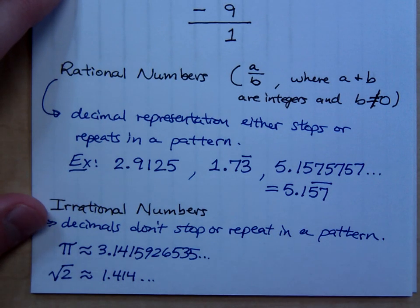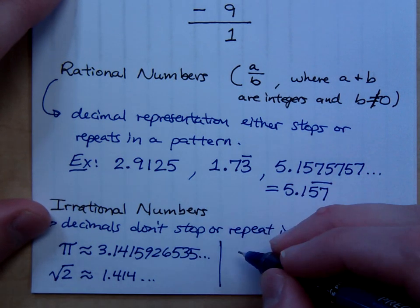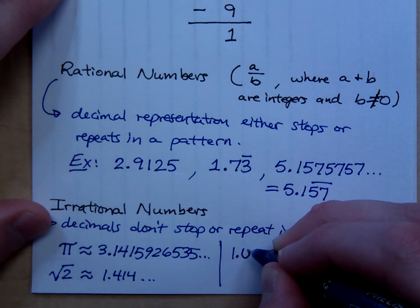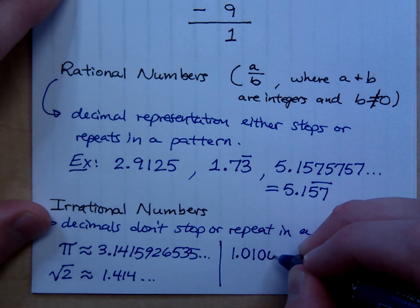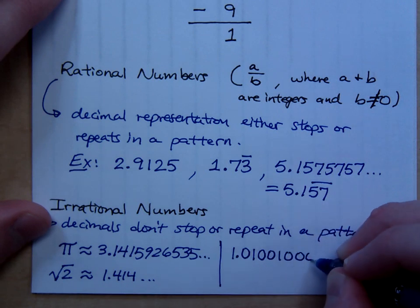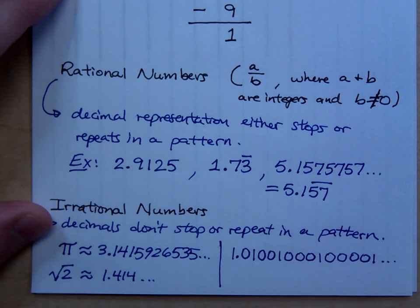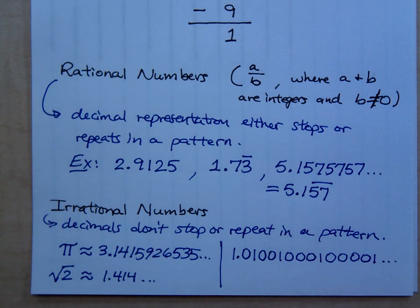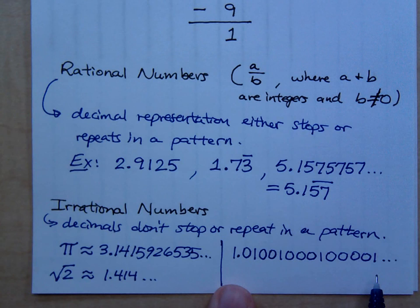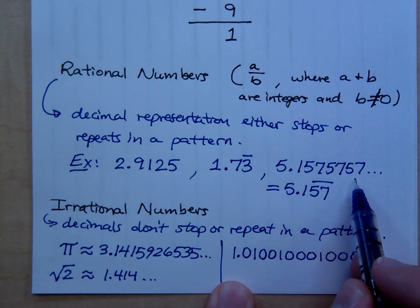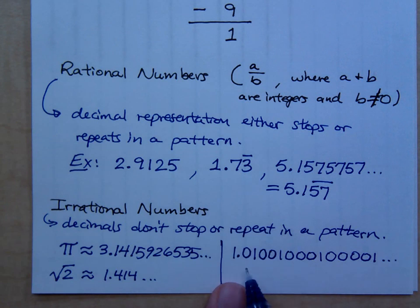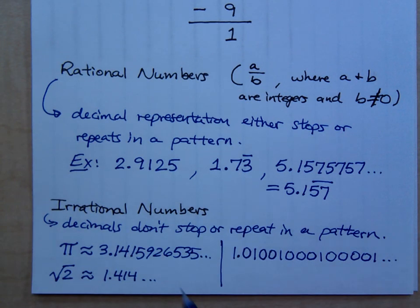And then there are numbers that we could make up where there's no repetition in the pattern. Here's a classic one. 1.01, 0, 0, 1, 0, 0, 0, 1, and so on. There's not a pattern. There's kind of like a pattern to this, like how you could keep on going, but it doesn't repeat. There's no repetition here. Like up here, it's 5, 7, 5, 7, 5, 7. Or this guy was, the 3's kept on going. This doesn't repeat the same way. So these are irrational numbers.